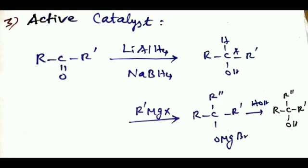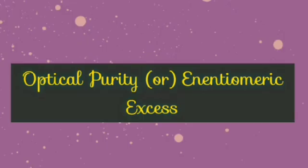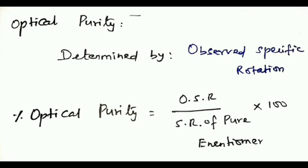Last topic: optical purity or enantiomeric excess. It is the relative proportion of a specific enantiomer in a mixture of enantiomers, or a measure of an enantiomer from a mixture of unequal amounts of enantiomers. It is determined by the observed specific rotation of the mixture. The formula is: percentage optical purity equals observed specific rotation divided by specific rotation of pure enantiomer, times 100.